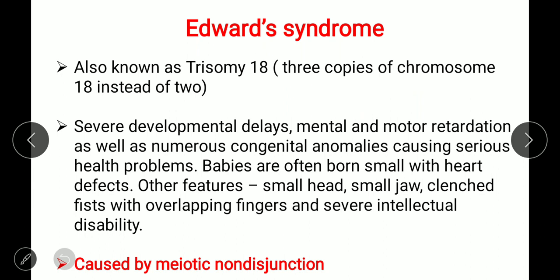Edward syndrome is the second most common trisomy after Down syndrome, occurring at chromosome 18. Symptoms include severe developmental delays, mental and motor retardation — meaning slowing of physical and mental activity — as well as numerous congenital anomalies such as heart defects and neural defects. Babies are often born small with heart defects, small head, small jaw, and clenched fists, where fingers curve inward due to tightening or hardening of the skin.